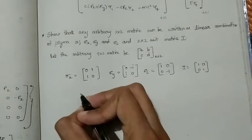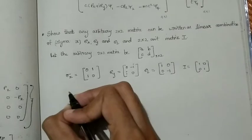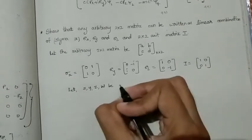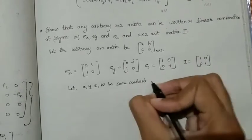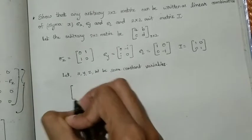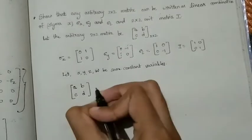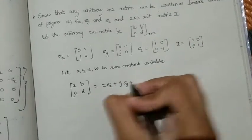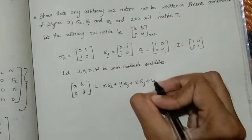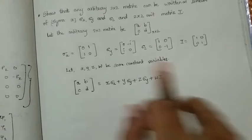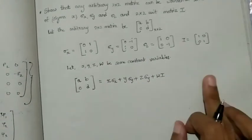Since we're looking for a linear combination, let x, y, z, w be some constant variables. According to the question, let us write the equation: [[a, b], [c, d]] can be expressed as x·Sigma_X + y·Sigma_Y + z·Sigma_Z + w·I. You can use any notation — e, f, g — in place of x, y, z, w. This is what we need to prove.